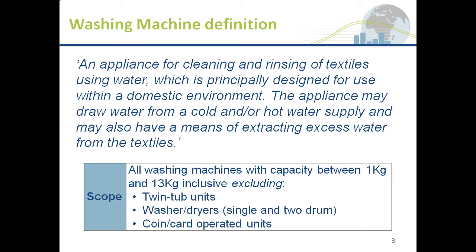Firstly, the definition. It's pretty straightforward: we're talking about an appliance for cleaning and rinsing of textiles using water, which is principally designed for use within the domestic environment. The appliance may draw water from cold or hot supply and may or may not have some means of extracting excess water — so may or may not have some kind of spin function.